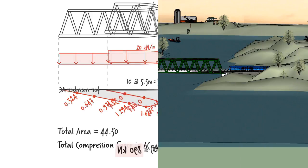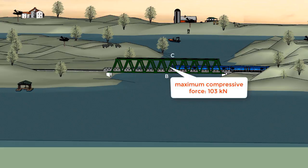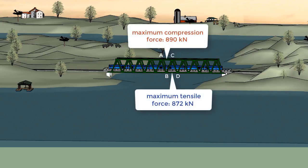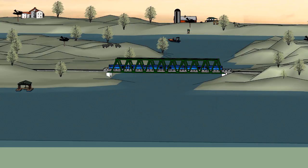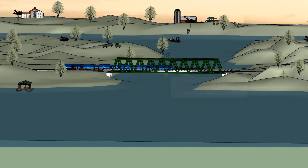To summarize, when the train is over the bridge covering the rightmost 24.44 meters of the track, member BC experiences its maximum compressive force. When the entire track is covered, both AC and BD undergo their maximum axial force. And when the train is over the leftmost 30.56 meters of the track, the maximum tensile force develops in BC. We can determine the effect of the moving load on the other truss members in a similar manner.